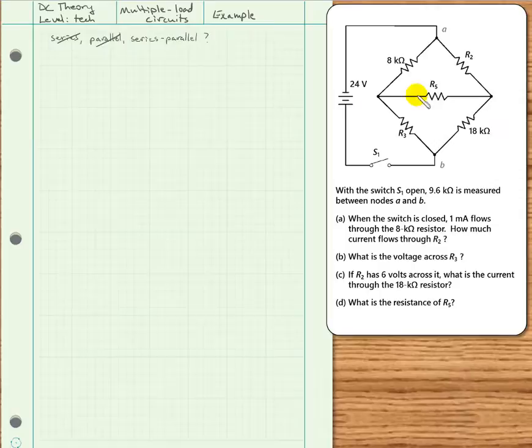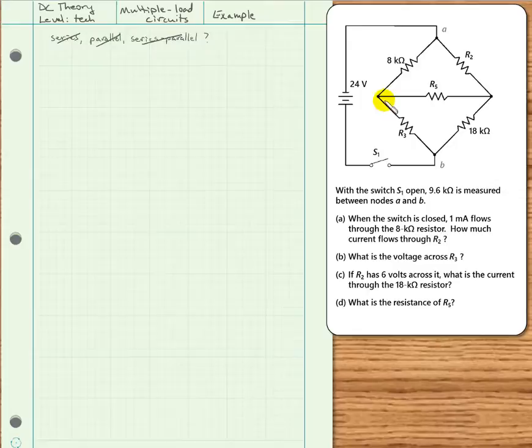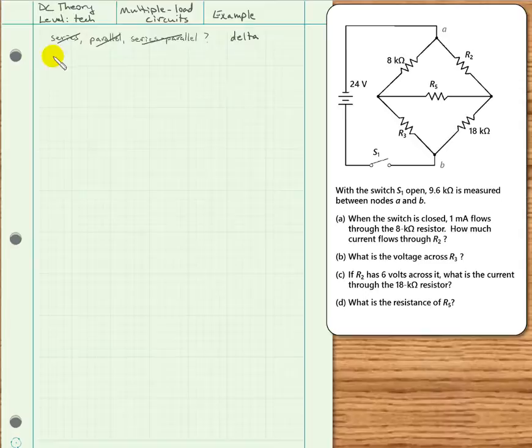Since we have no components in series with each other and no branches in parallel with each other, it cannot be series-parallel either. In fact, this is what we call a bridge circuit — also referred to as a delta configuration. We'll study this circuit in detail a bit later in the course, but for now, even though it's not one of the three standard circuit configurations, we can still tackle it using Ohm's law and Kirchhoff's voltage and current laws.